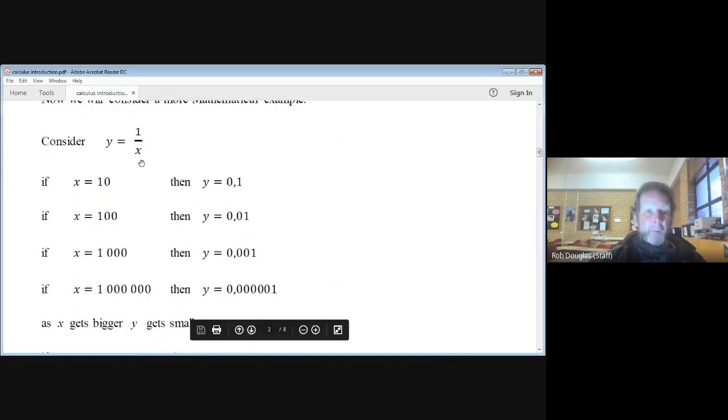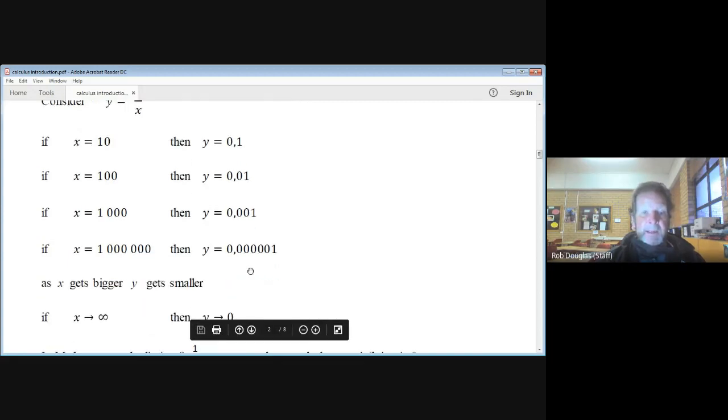Now there's another example here about limits. If you go y equals one over x, if we put in 10, we get a pretty small number, 0.1. If we put in a hundred, we get one over a hundred. A thousand, a million. The deal is this: one over a million is pretty close to nothing—it's a very tiny fraction. If you put in a hundred billion billion billion billion, your number would be incredibly close to zero. The big deal is: as x gets bigger, y gets smaller, a lot smaller. If it gets really big...